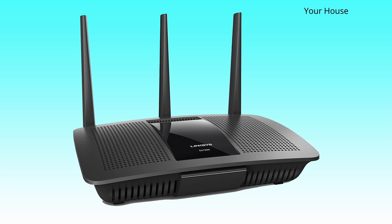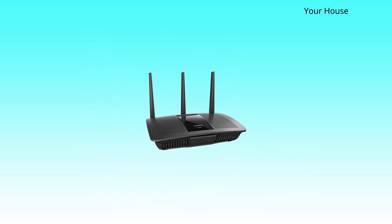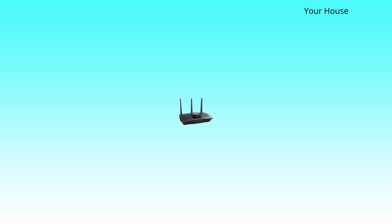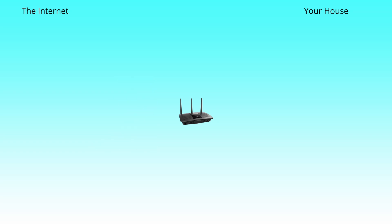Let's set the scene. Imagine your house - it's got a router. It could be wireless with access points, or just the one you've got from BT or TalkTalk or wherever. The router talks to the internet via full fiber, ADSL, wireless, or satellite. Your provider will give you an external or public internet address, and if you're lucky they'll fix it so you always have the same address, which is quite useful.